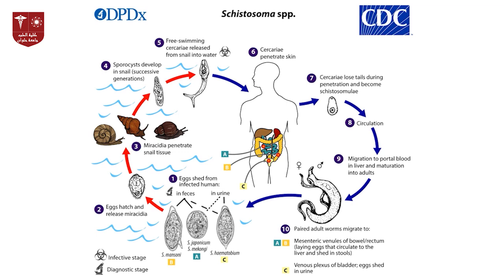Be aware that if control measures are not maintained, we can see a high prevalence of schistosomiasis again, because the snail host and the animal host — rats — are still present in our environment.